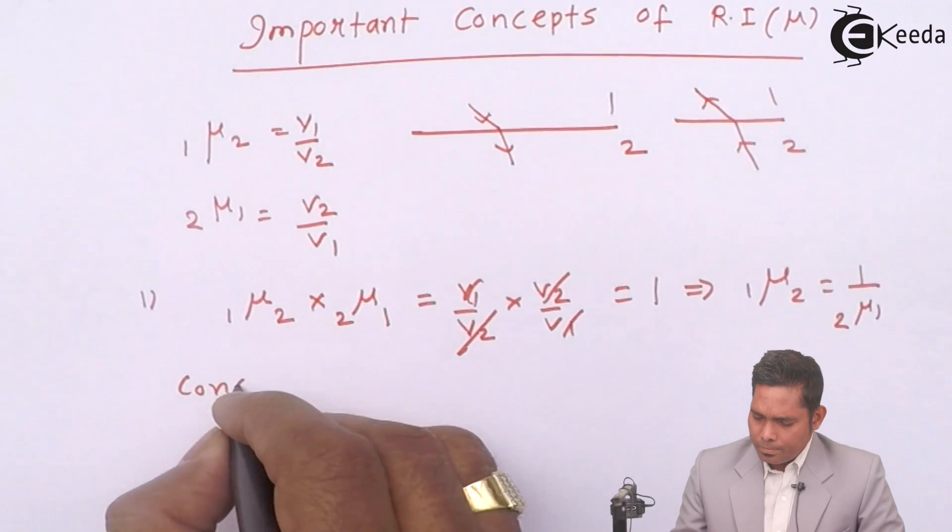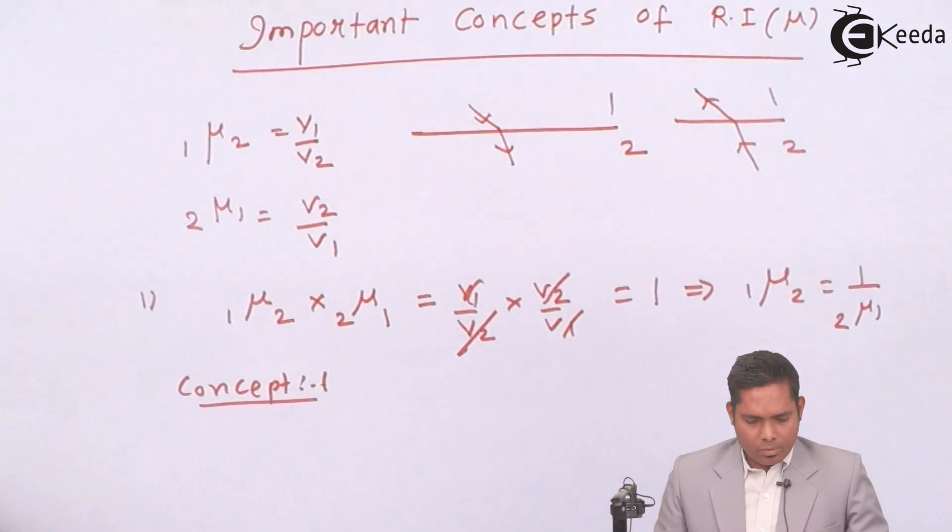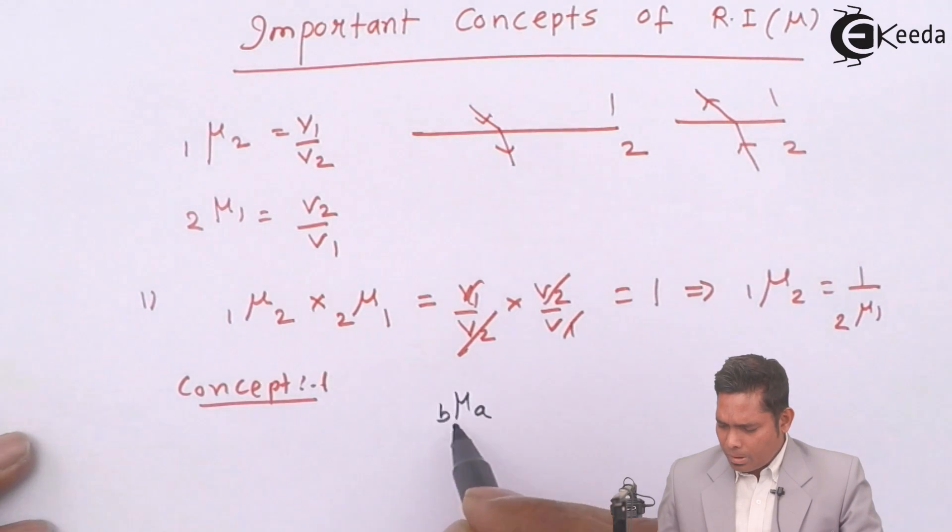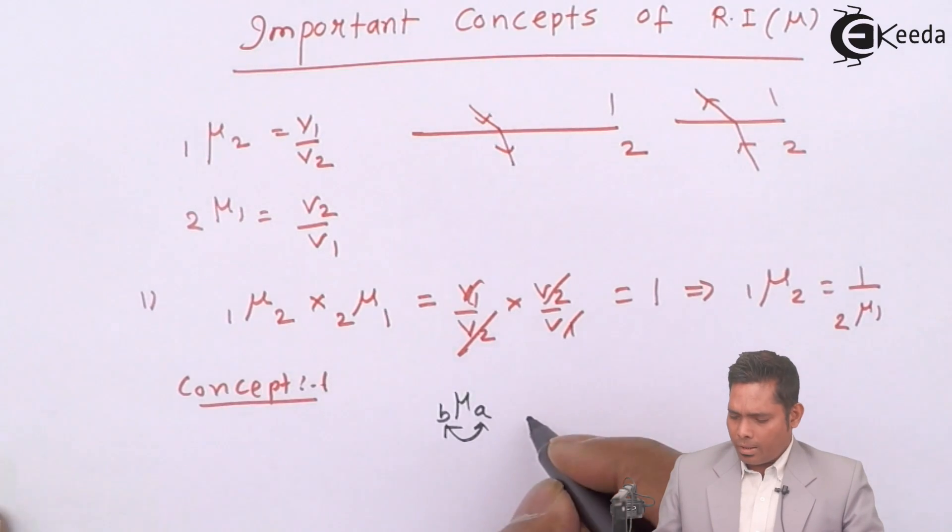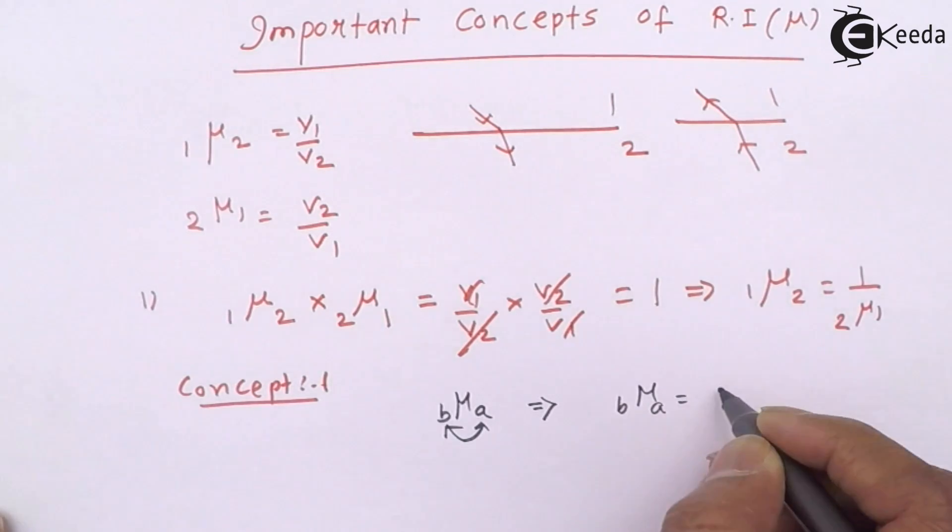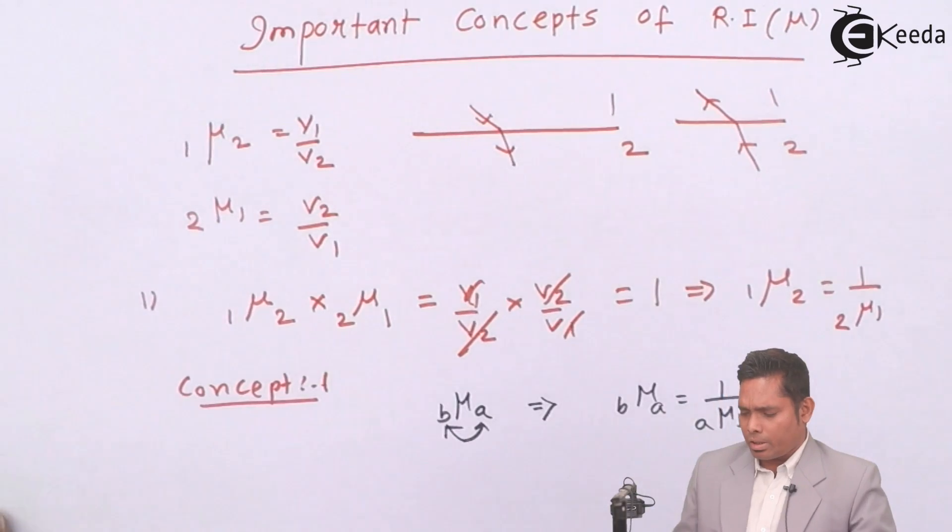That means, concept 1: if this is A, this is B, if I interchange this, then that will become the reciprocal. That implies μ_BA is 1 upon reciprocal of μ_AB. If you interchange this, then you have to take the reciprocal.